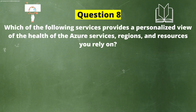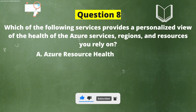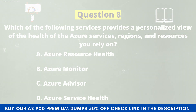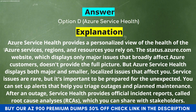Next question. Which of the following services provides a personalized view of the health of the Azure services, regions, and resources you rely on? Option A: Azure Resource Health. Option B: Azure Monitor. Option C: Azure Advisor. Option D: Azure Service Health. The correct answer is Option D — Azure Service Health. Azure Service Health provides a personalized view of the health of Azure services, regions, and resources you rely on. The status.azure.com website displays only major issues broadly affecting Azure customers, but Azure Service Health displays both major and smaller localized issues that affect you. Service issues are rare, but you can set up alerts for outages and planned maintenance. After an outage, Service Health provides official incident reports called Root Cause Analyses (RCAs) which you can share with stakeholders.